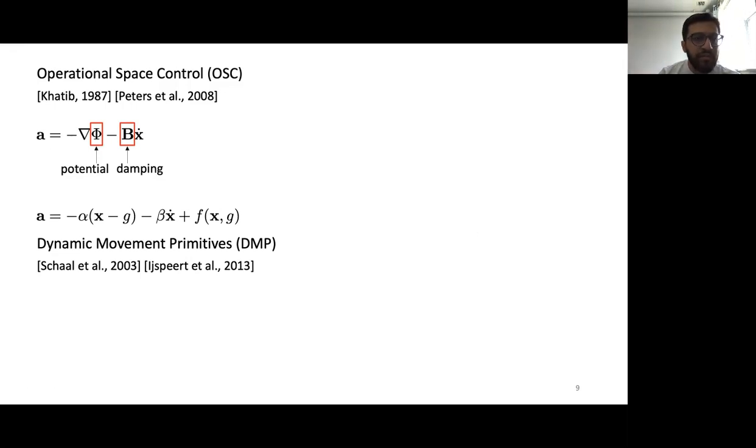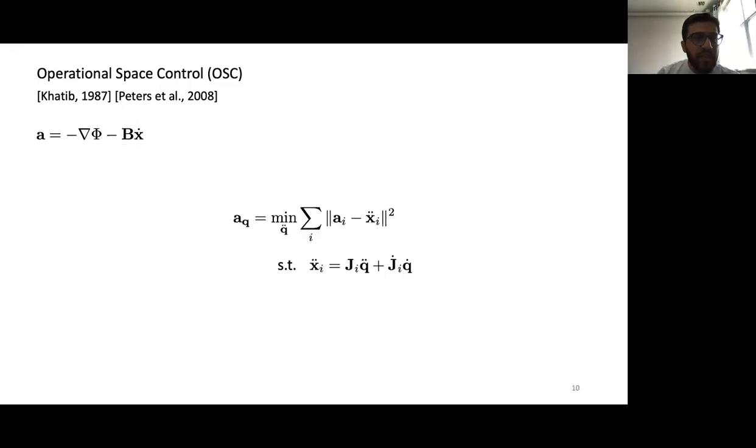In Operational Space Control, what you do is define a bunch of these different second-order policies to do many different tasks, and then you solve a least square problem like this one to find out what the action should be for the full joint configuration of the robot. Naturally, when you think of multiple tasks like these, you will eventually run into problems where the policies might try to fight against each other because they have competing objectives. A natural extension was to introduce weights which would try to balance out these policies.